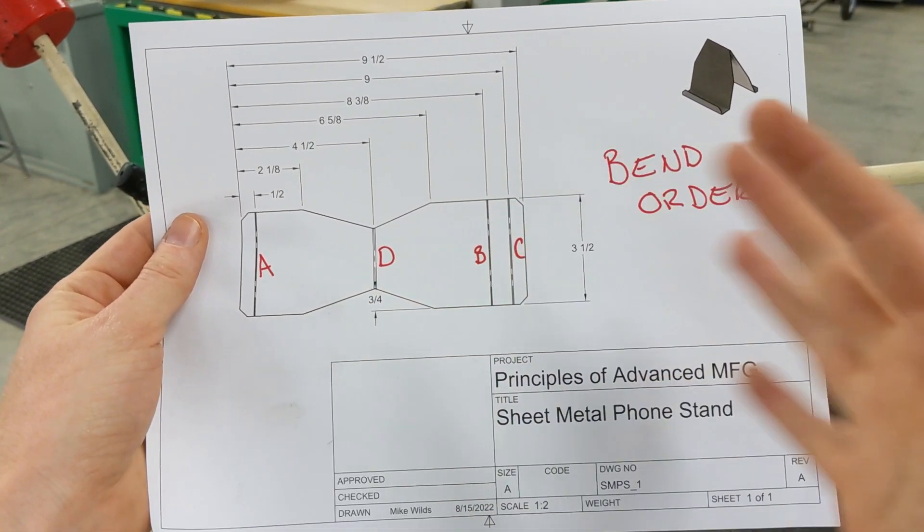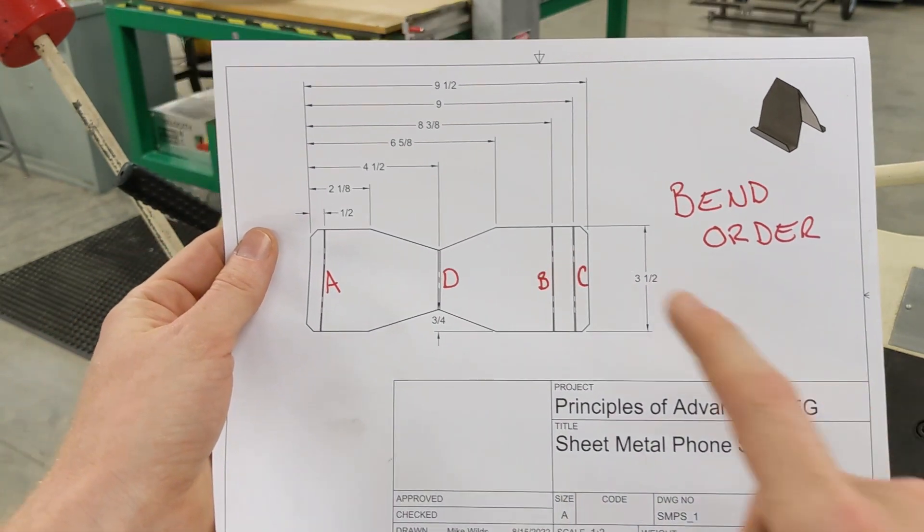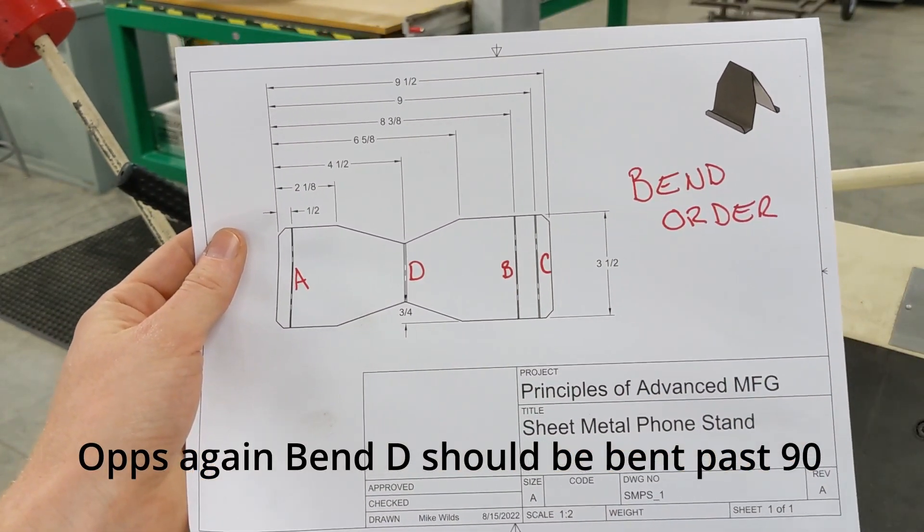A, B, and C are all roughly 45 degree angles. D is going to be like 65 to 80 degrees.